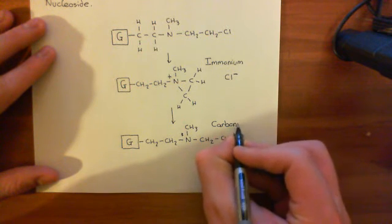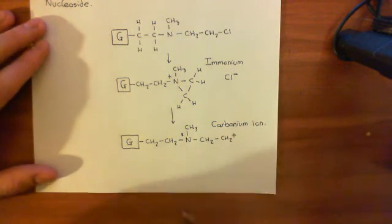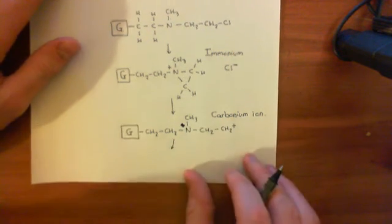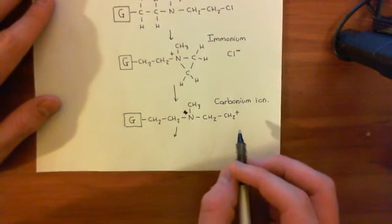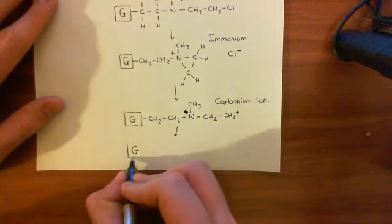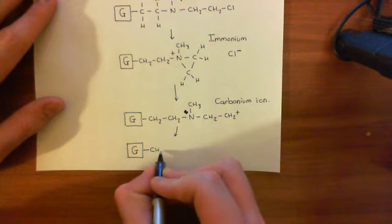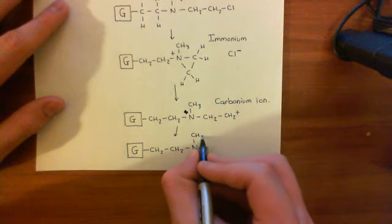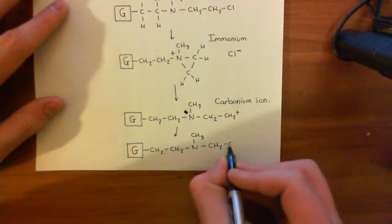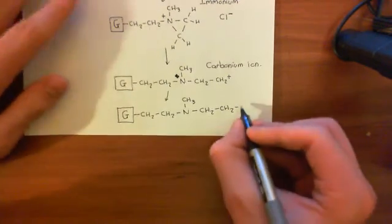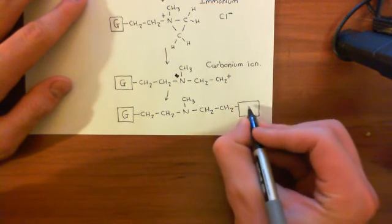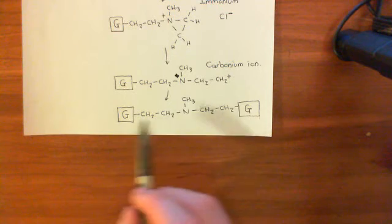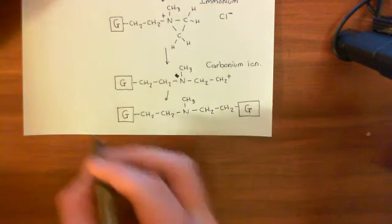All this carbonium ion has to do is find another guanine organic base, and then it can link onto that other guanine organic base. All it needs to do is bind to another guanine base, and then what you'll have is guanine, then this drug molecule — this nitrogen mustard — these methylene groups, the nitrogen in the middle with the methyl group sticking off the side, then two more methylene groups, and then finally another guanine organic base over here, which this methylene group is linked to. So you can link two guanines together with this drug — you can form cross-links.